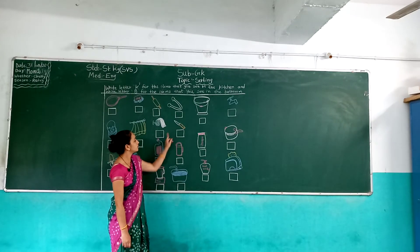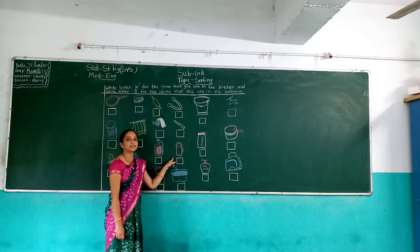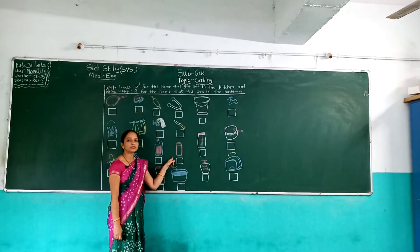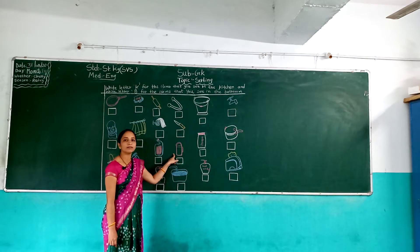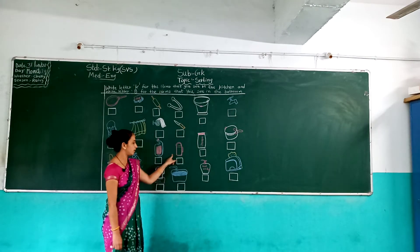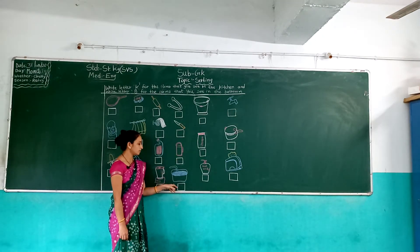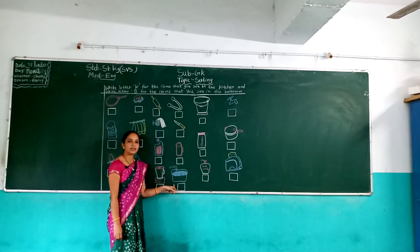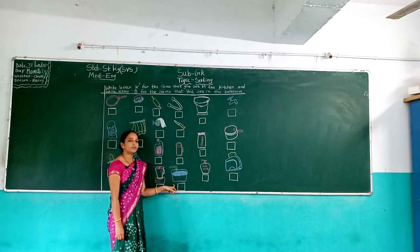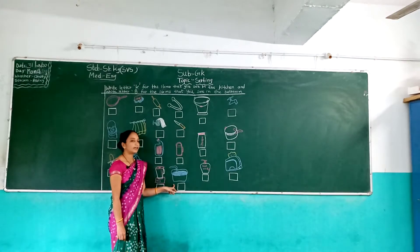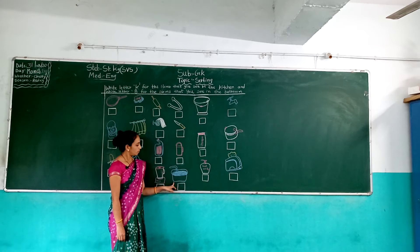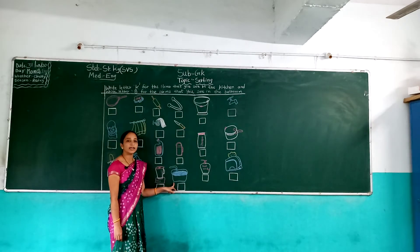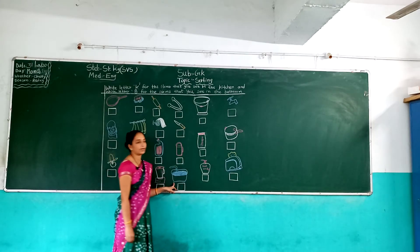And next, knife — mama इससे सब्जी काट करते हैं न? Yes. And next, thermos. Thermos कहाँ use करते हैं? Kitchen में. And next, which picture is this? Tub — bathtub. Bathtub कहाँ होता है? Bathroom में.